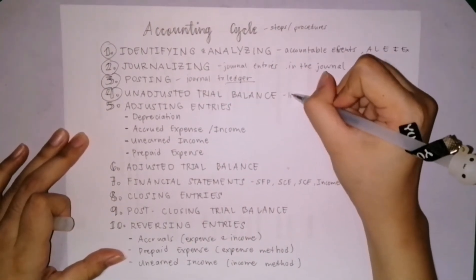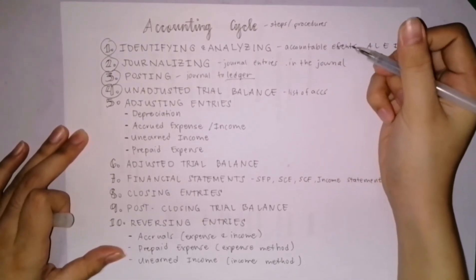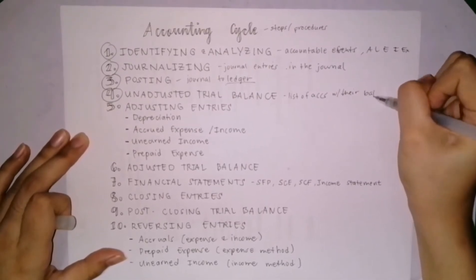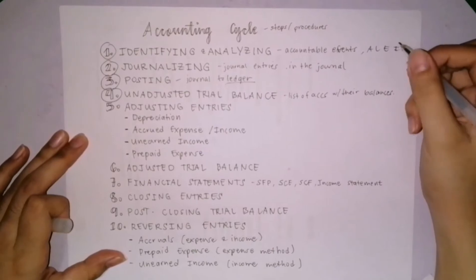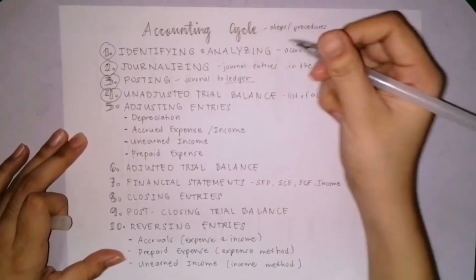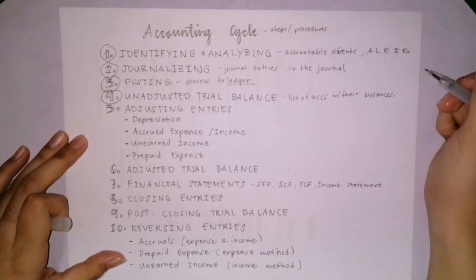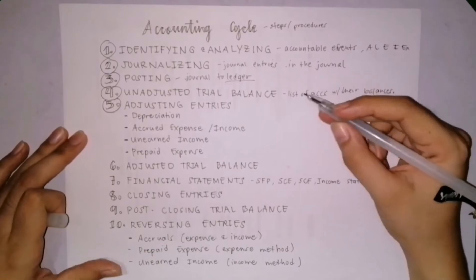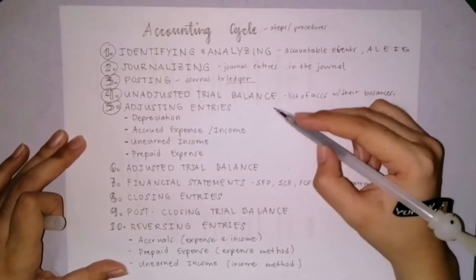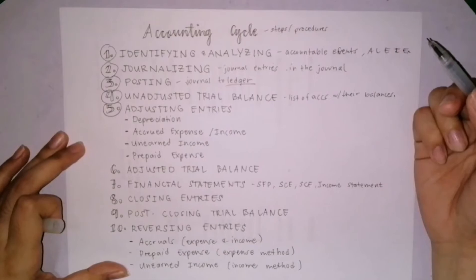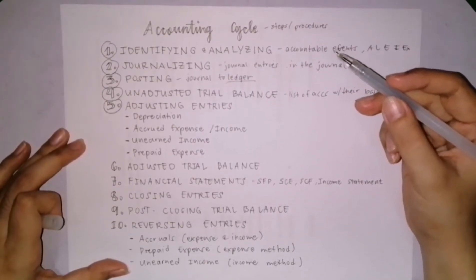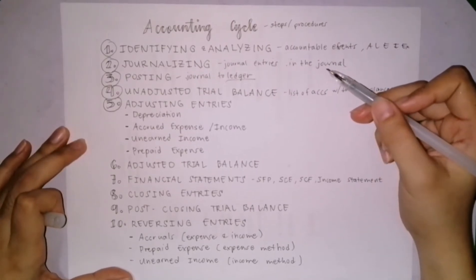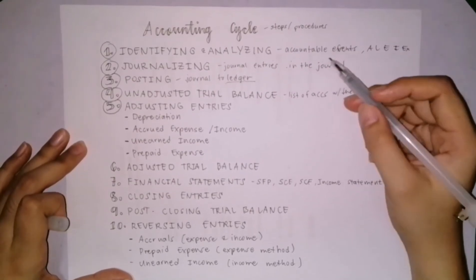Step 4 is the preparation of an unadjusted trial balance. It is the list of all accounts with their balances. Whatever the total amounts of accounts obtained from the ledger, those are used in the unadjusted trial balance. Next is adjusting entries. Adjusting entries are made in order to update accounts on the basis of accrual accounting. Accrual accounting says that you record income when earned regardless of when collected, and you record expense when incurred regardless of when paid.